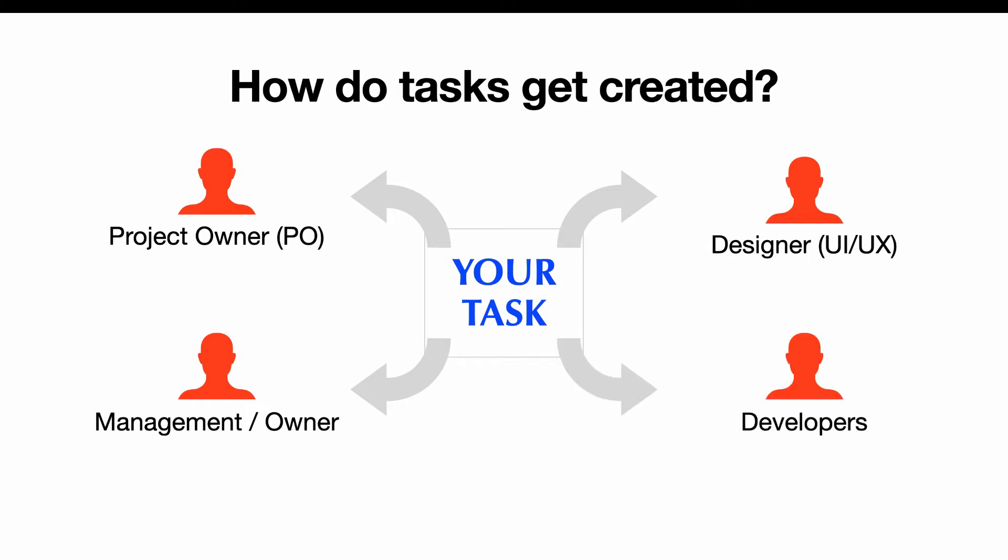The next one will be other developers — your colleagues. They may notice a bug or have a technical improvement for the codebase, maybe a refactoring ticket, or they're helping the PO on a technical topic and creating tickets for them. And the last one would be the quality assurance or QA team. They will typically be creating bugs, or tasks that improve some sort of automated tests.